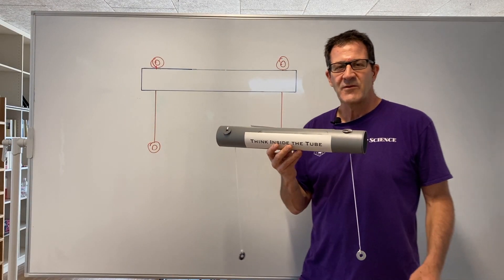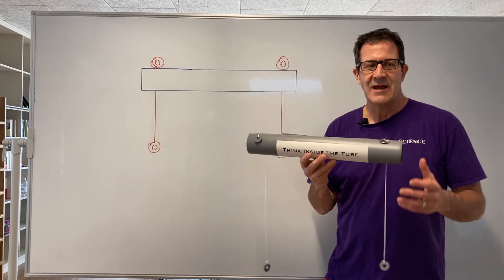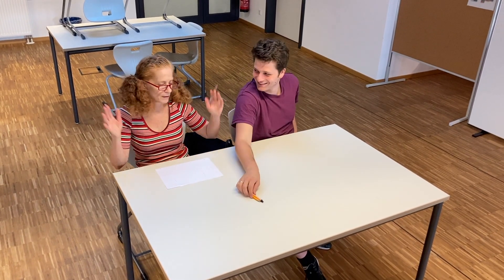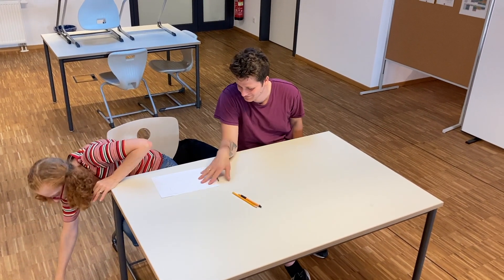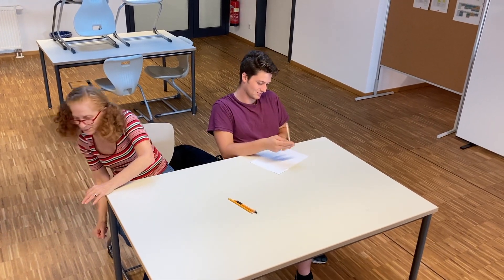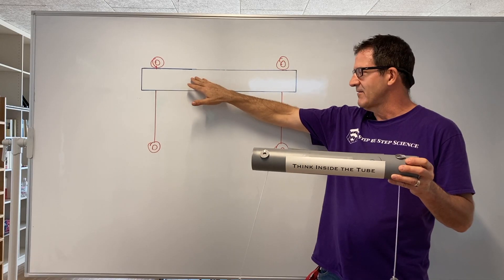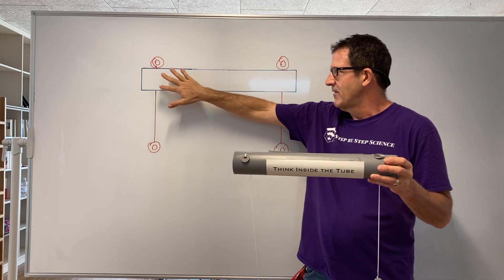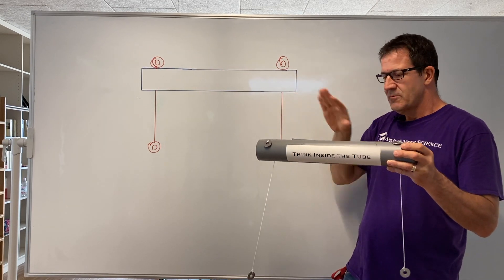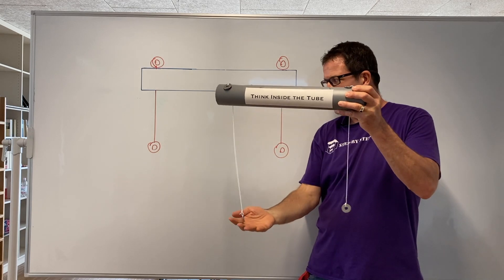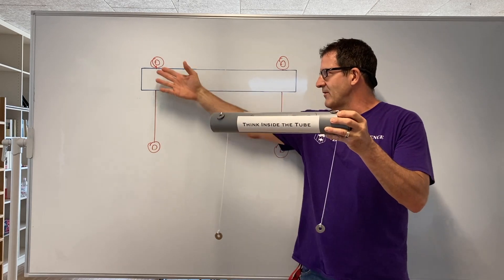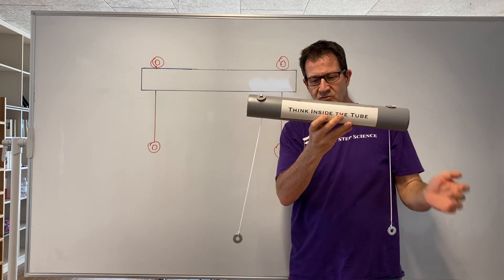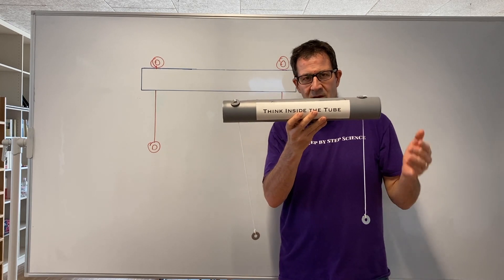To begin this demonstration, I have each student take out a piece of paper and a pen or pencil. On their paper, they are supposed to draw this diagram — where they're going to draw what they think is happening inside the tube after I do each of the experiments. The blue line here is actually the tube, and then we have the string and the two washers at the top and the two washers at the bottom.